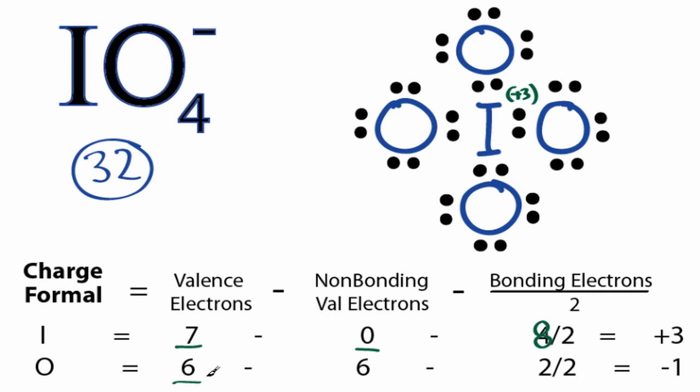If we look at the oxygens, group 6 on the periodic table, 6 valence electrons, we have 6 non-bonding, and each of the oxygens is the same, we only need to do 1.